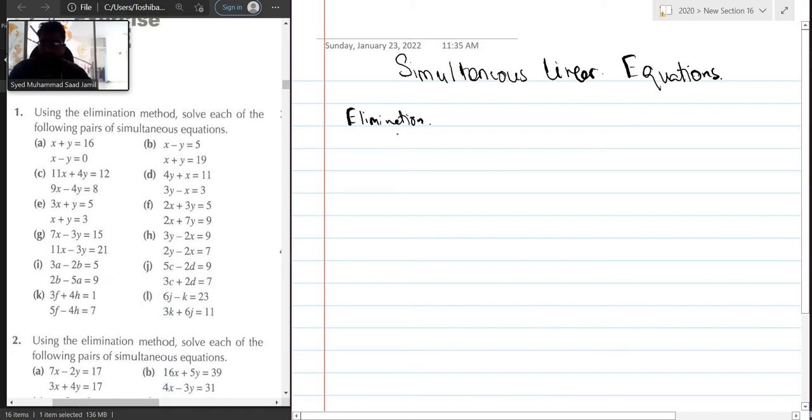Now on the left hand side of the screen you have the questions. We are first starting with question number 1a. So you have x plus y is equal to 16, which is equation 1, and then you have x minus y is equal to 0, which is your equation 2.